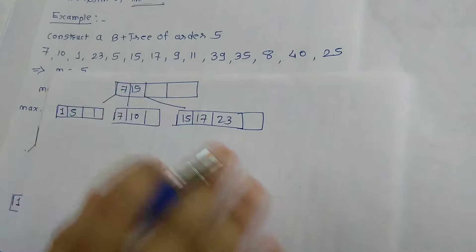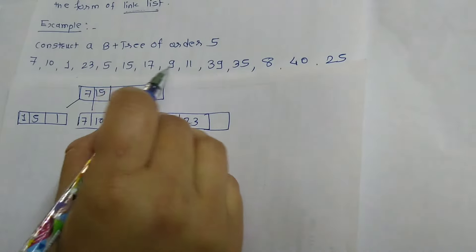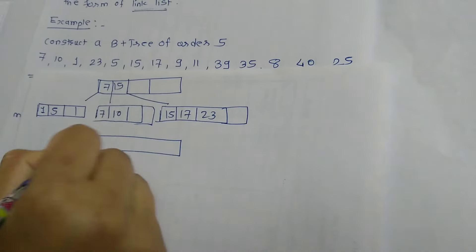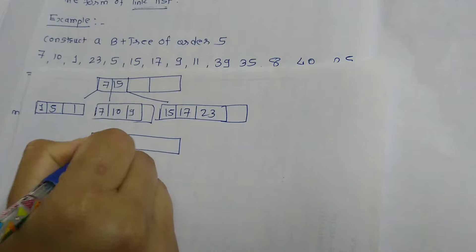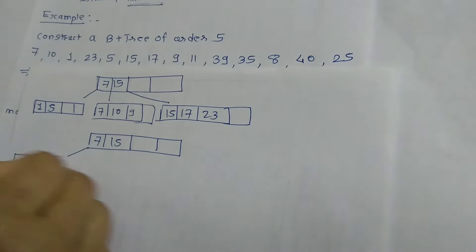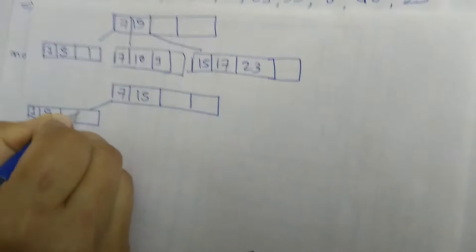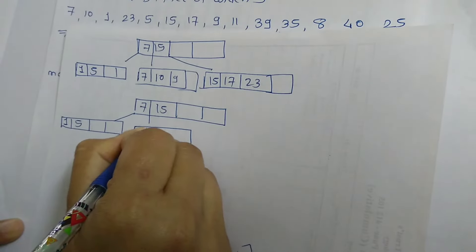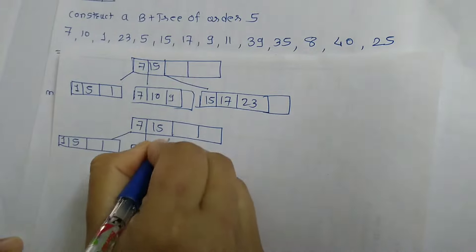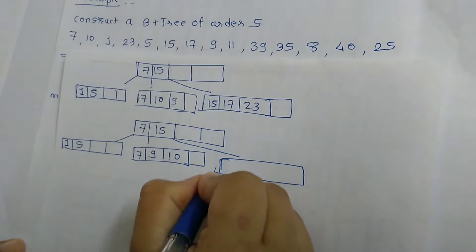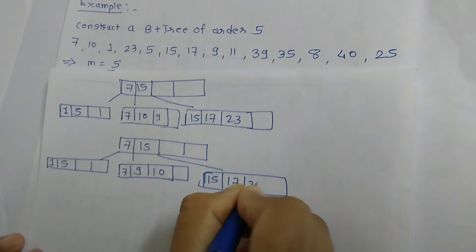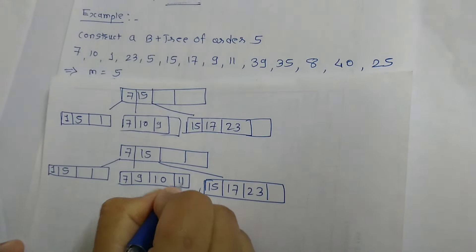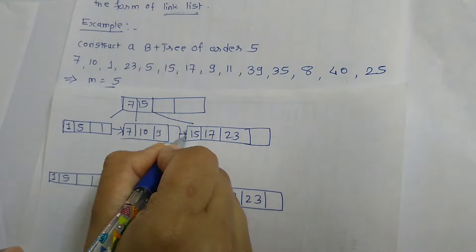The next element is 9. The position of 9 is in the right child of 7. I can write 9 there: so right child of 7 becomes 7, 9 and 10. Two more keys can be stored there. The right child of 15 is 15, 17 and 23 — one more key can be stored. The next element is 11, so I can store 11 in the right child of 7 as well. Don't forget to give the links.